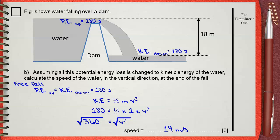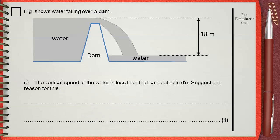Question C. The vertical speed of the water is less than that calculated in B. Suggest one reason for this.